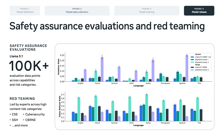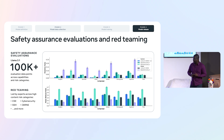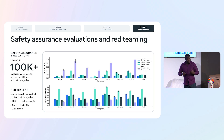Before we release any single LLAMA, we go through a very rigorous safety assurance evaluation and red teaming process. We do that across extensive scaled safety benchmark evaluations — thousands and thousands of eval points — and we do a lot of adversarial red teaming on the highest risk categories: cybersecurity, child safety, chemical, biological, and nuclear types of risk. We ensure that before LLAMA and those components get into the hands of developers, all our responsible goals are met.